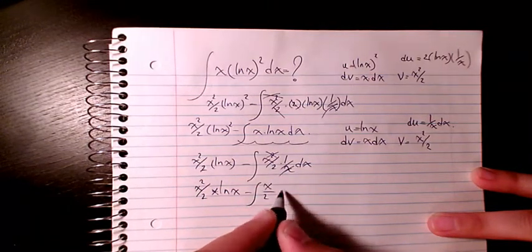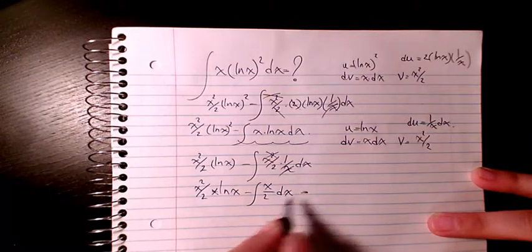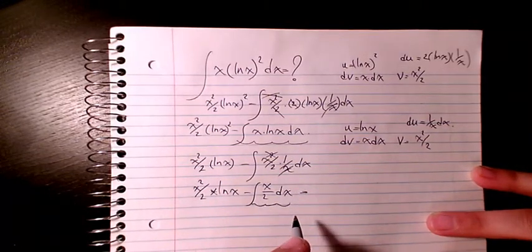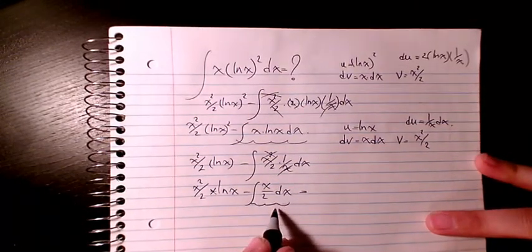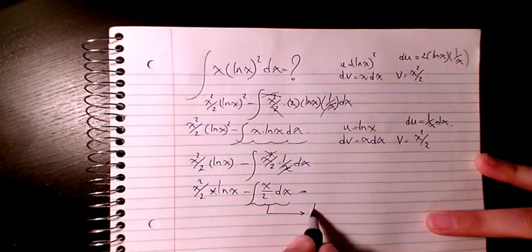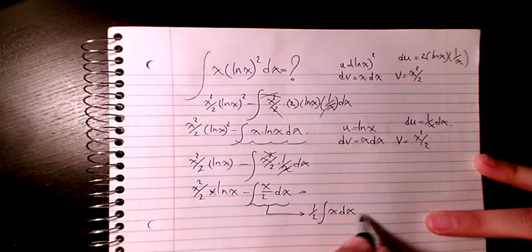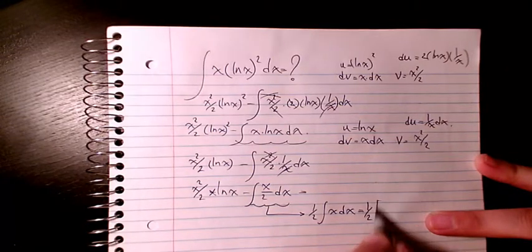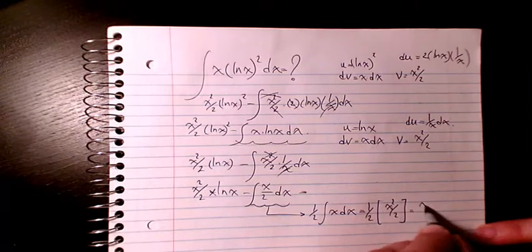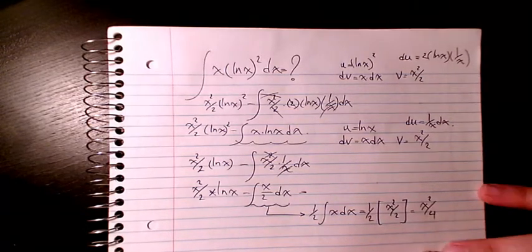x over x dx. And the integration of this part will be 1 over 2 is 1 over 2, and integration of x dx will be x squared divided by 2, which is x squared divided by 4.